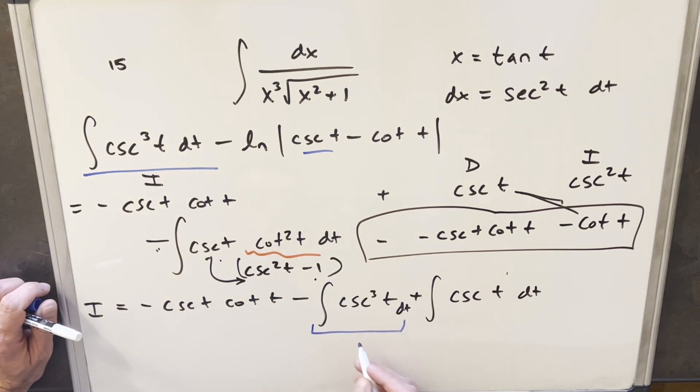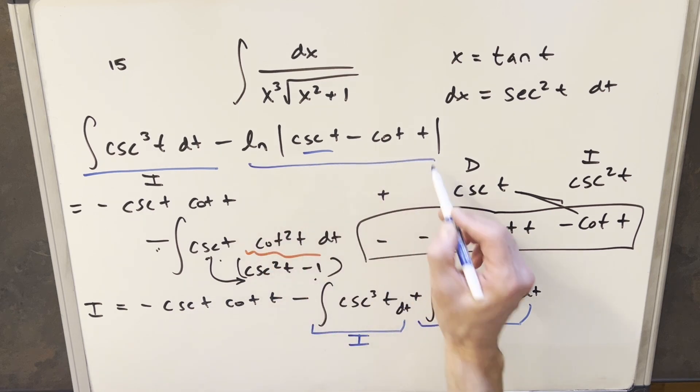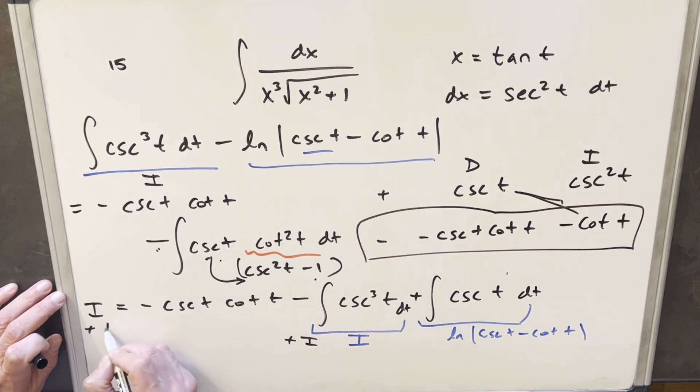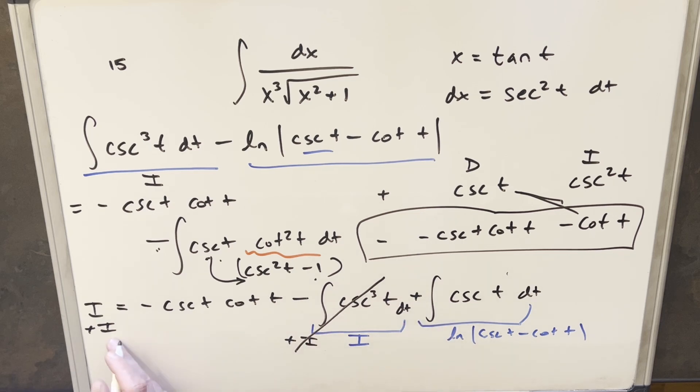But now this here is actually just another copy of our original integral, so I can call this i. That's nice. And we already found this, because this is what we did before. This is this thing right here. So what I'm going to do, we just want to solve for our i. So I'm going to add an i on both sides here. Okay, so this is going to cancel here, because we have minus i plus i, so those go away. And then here on the left side, we're going to have 2i. I'm just going to clean up the board so I can get some more space.